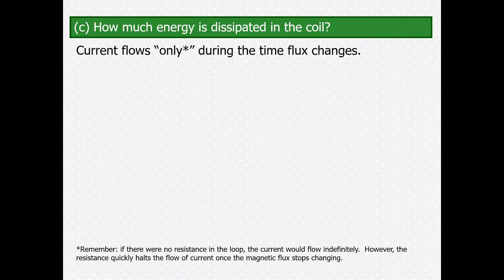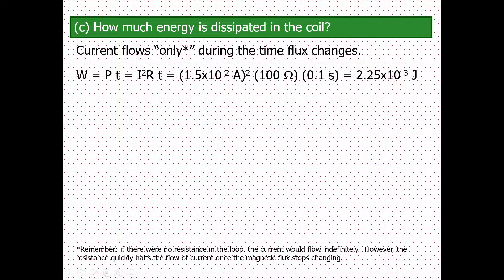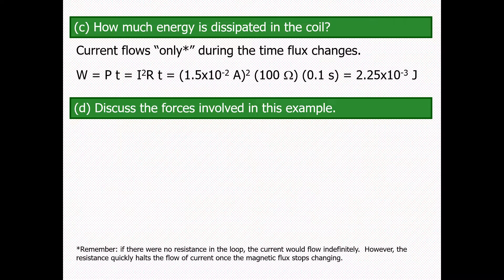For part three, how much energy is dissipated in the coil: current flows only during the time the flux is changing. The work done equals power multiplied by time, which equals I²Rt. Putting in the values, that equals 2.25 times 10 to the power minus 3 joules. This is the amount of energy being dissipated.